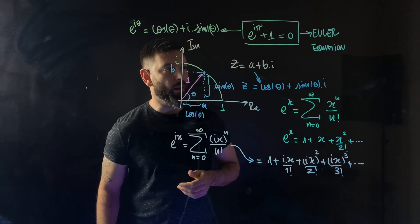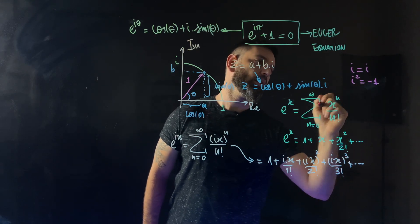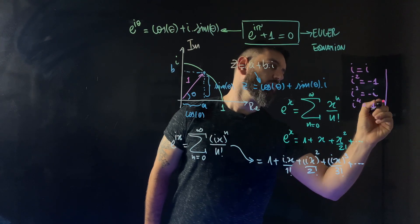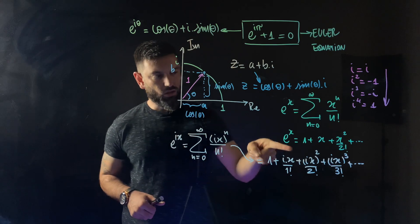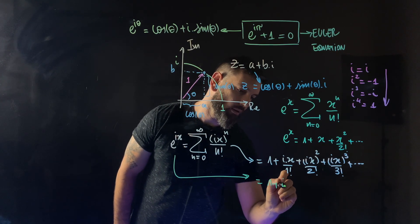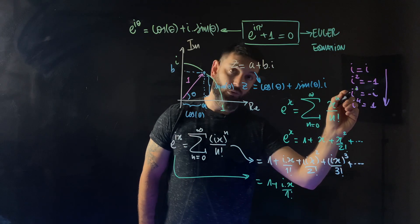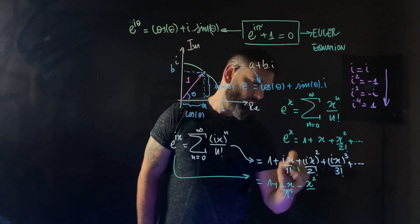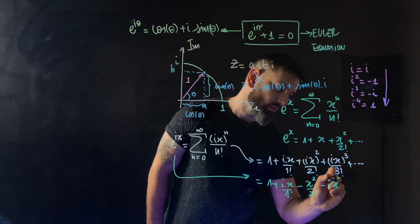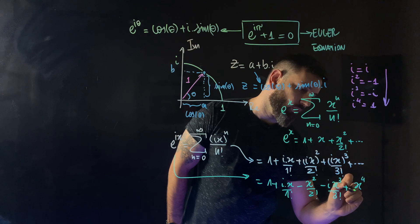Something funny happens when you remember the pattern of powers of i: i^1 = i, i^2 = -1, i^3 = -i, i^4 = 1, and then this loops. So substituting these back, the series becomes 1 + ix - x²/2! - ix³/3! + x⁴/4! and this pattern continues.